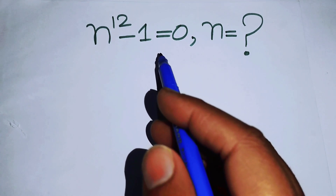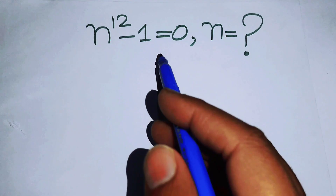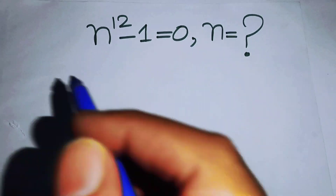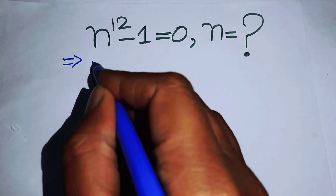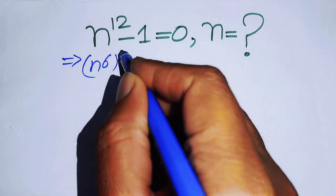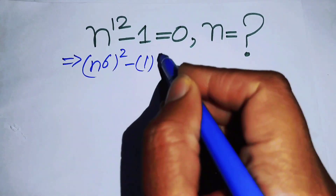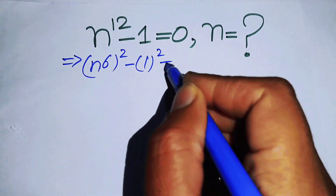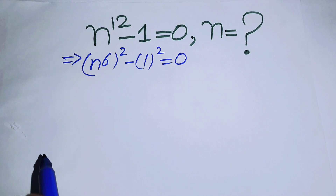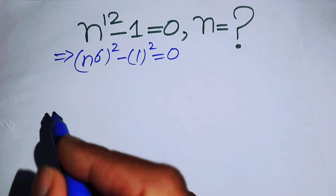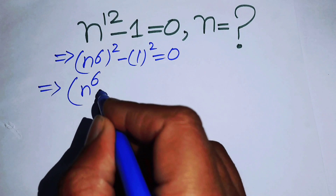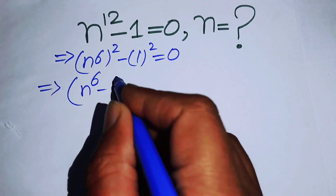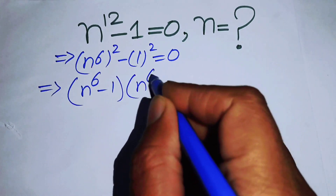The first thing we do is write n to the power of 12 as n to the power of 6, whole squared, minus 1 squared, equals 0. We use the difference of squares identity and write it as (n^6 - 1)(n^6 + 1) equals 0.